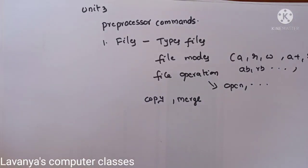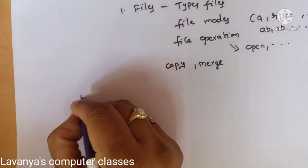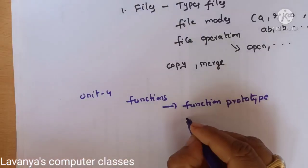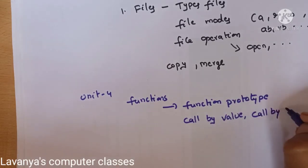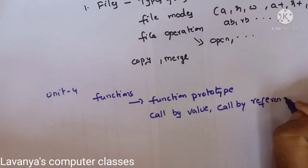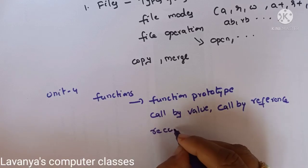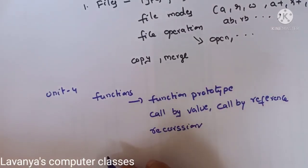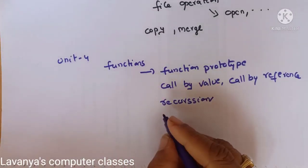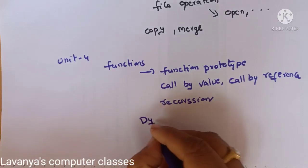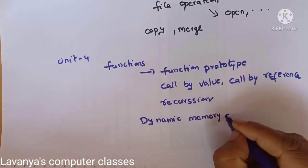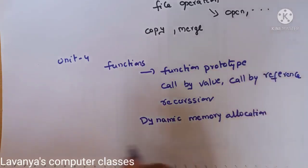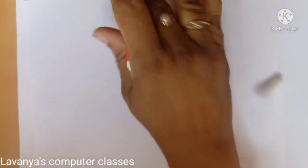Unit 4 is functions and dynamic memory allocation, and the theory question is preprocessor commands. In Unit 4, total function concepts are there: what is a function, function prototype, call by value, call by reference with example programs — also known as passing parameters in functions. Then recursion — a very, very important concept — with programs. Mostly the factorial program using recursion is a very important question. Theory question: dynamic memory allocation, enum, storage classes, typecasting — one question compulsorily coming in examination.